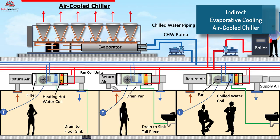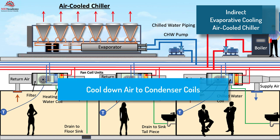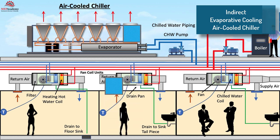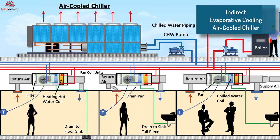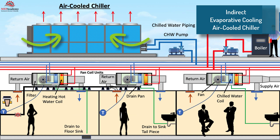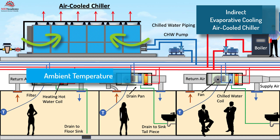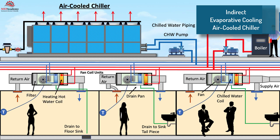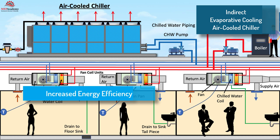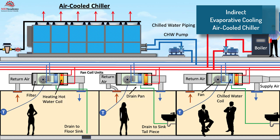Indirect evaporative cooling of air-cooled chillers. Indirect evaporative cooling is also used to cool down the condenser coils of an air-cooled chiller. Panels containing wetted medium can be attached around the air-cooled chiller, effectively closing off the pathway for the condenser fan inlet air. This causes the condenser inlet air to travel through the media, which is sprayed with water based on the ambient temperature and the compressor's liquid line temperature. This pre-cools the incoming air before it travels over the warm condenser coils, allowing for increased energy efficiency. Before attaching the panels, the condenser coils should be cleaned to ensure the best performance.